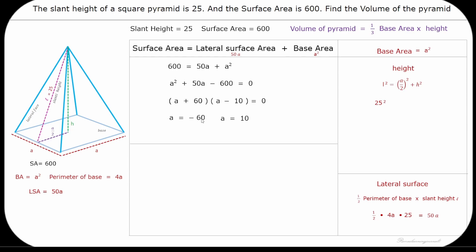Since A is a base length, it cannot be negative. So A equal to -60 is not a valid value.